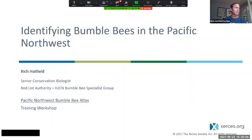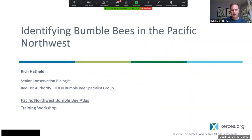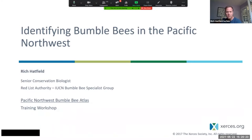We are now going to get started with talking about identifying bumblebees in the Pacific Northwest. Some of this is really going to be focused on these four primary species that we're looking for. I want to make sure that you all know the basics of how to identify those four species, but also what photographs are the best ones to take.